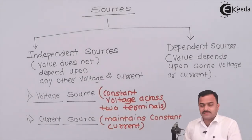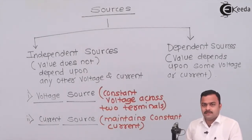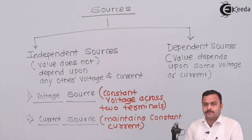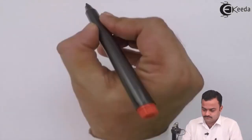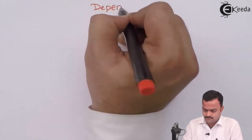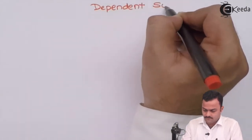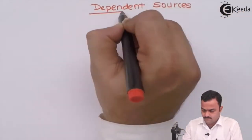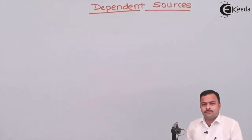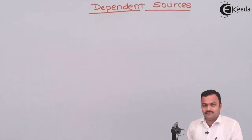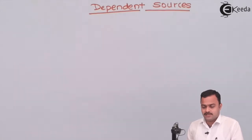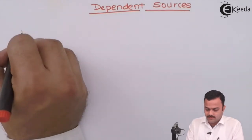As far as dependent sources are concerned, there are four classifications. It depends on which voltage or current is being controlled by which other voltage or current. We have two parameters — current and voltage — giving us four combinations.